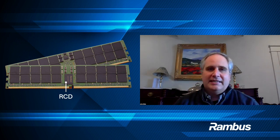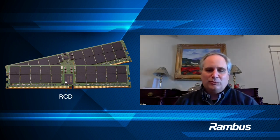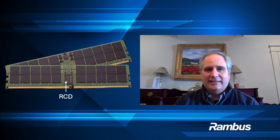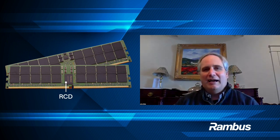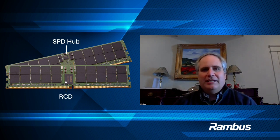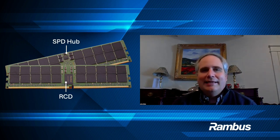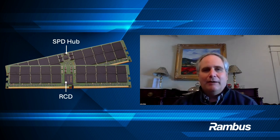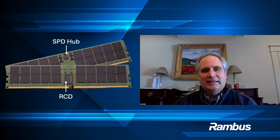The second device is the SPD, which is what it was called in DDR4 for serial presence detect. In DDR5, that device has become the SPD hub. It has a similar feature as DDR4, where it is a non-volatile memory that contains information about the DIMM and its configuration. That's used at initialization and during training.